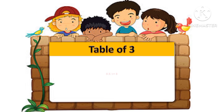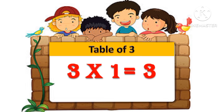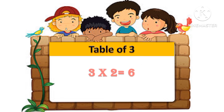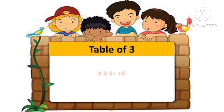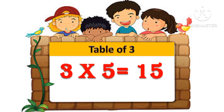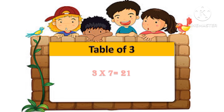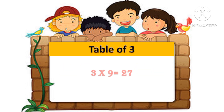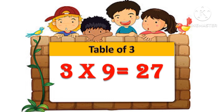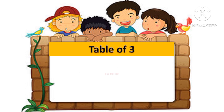Table of 3. 3 1s are 3. 3 2s are 6. 3 3s are 9. 3 4s are 12. 3 5s are 15. 3 6s are 18. 3 7s are 21. 3 8s are 24. 3 9s are 27. 3 10s are 30.